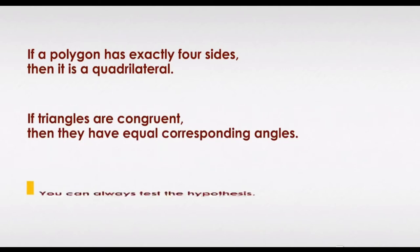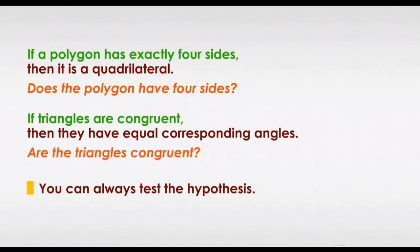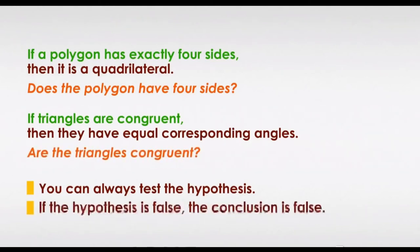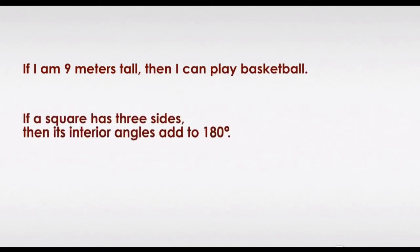You can always test the hypothesis. Does the polygon have four sides? Are the triangles congruent? If the hypothesis is false, the conclusion is false. Here are two examples of conditional statements with false hypotheses: if I am 9 meters tall, then I can play basketball. If a square has three sides, then its interior angles add to 180 degrees.